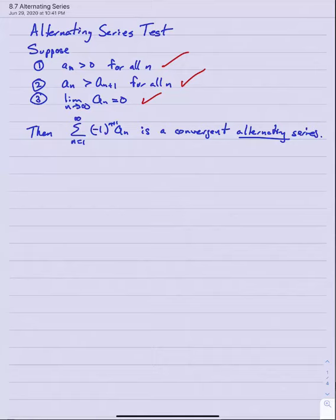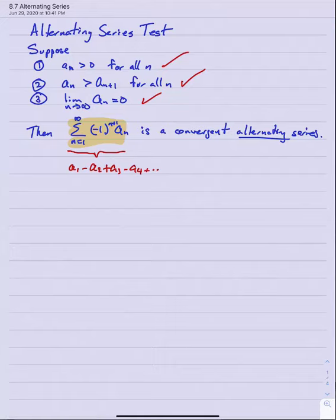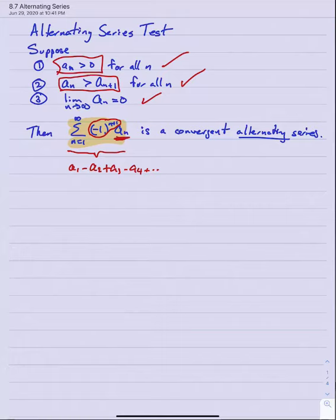If those three things are true, then the series — which I'm going to call an alternating series — when written out looks like a_1 minus a_2 plus a_3 minus a_4 and so on. You can see why it's called an alternating series: the (-1)^(n+1) factor makes the terms alternate in sign, while the a_n part is strictly positive, forms a decreasing sequence, and has limit zero. If that's the case, this alternating series converges.